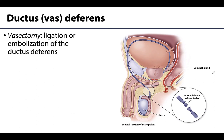An important clinical procedure regarding the ductus deferens is the vasectomy. A vasectomy is the ligation or embolization of the ductus deferens. Considering the function of the ductus deferens — the transport of sperm — if the vas is ligated, transport of sperm to the urethra and thus to the external environment will not be possible.